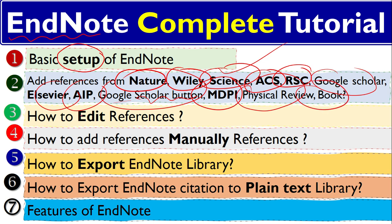The third step is how to edit references. Why do we need to edit references? Sometimes there is an extra word or some character like a dollar sign or other artifacts. You cannot simply delete when EndNote is active, so you have to go to EndNote and edit it there and then cite that reference again.